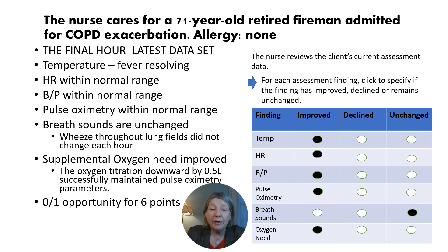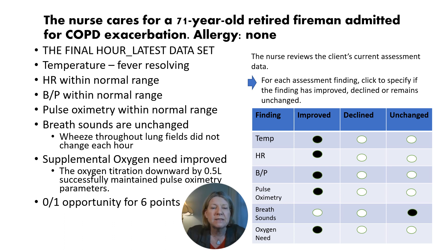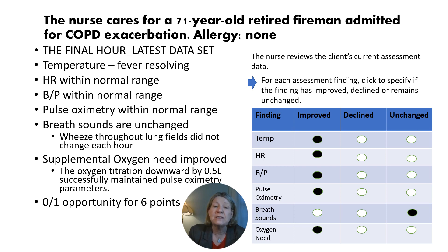Using the same scenario client, we're going to do a different trend item. The nurse cares for the 71-year-old retired fireman admitted for COPD exacerbation, no known allergies. That final 1000 hour is the latest data set. Temperature — fever was resolving. Heart rate — now within normal range. Blood pressure — within normal range. Pulse oximetry — now within the parameter of 91 to 94%. That's different from you or me; we would be greater than 97% — different in the COPD lung setting. Breath sounds are unchanged with wheezes throughout lung fields each hour. Supplemental oxygen need improved because that oxygen titration downward by 0.5 liters successfully maintained pulse oximetry parameters.